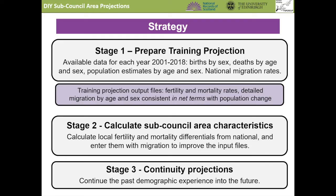So let's start with the strategy. It has three parts to it. In stage one, we learn about the demographic characteristics of each local area in the recent past by preparing a training projection in PopGroup that covers the past years. In stage two, we put that new knowledge as assumptions in PopGroup's input files. And in stage three, we use them in a projection that continues into the future the distinguishing features that we have measured for each local area.